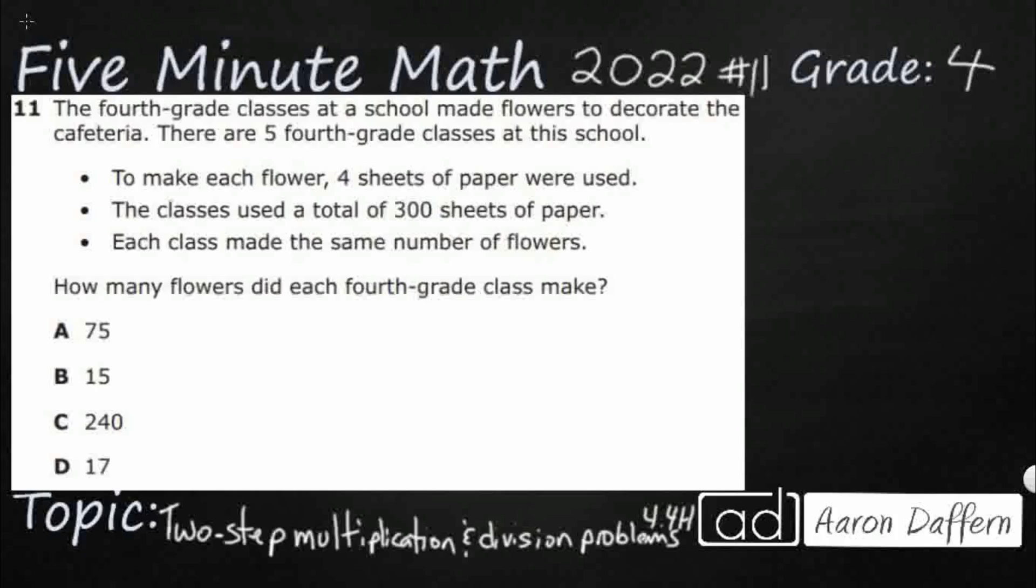Hello and welcome to 5-Minute Math. Today we are looking at the fourth grade concept of two-step multiplication and division problems. This is standard 4.4H in the great state of Texas and we are using item number 11 of the 2022 released STAAR test. If you haven't done so already, please go ahead and take a moment to pause the video, work this problem out on your own, unpause it, and we will look at our answers together.